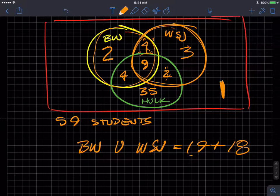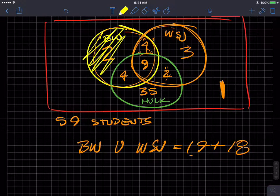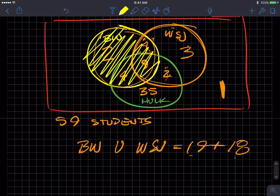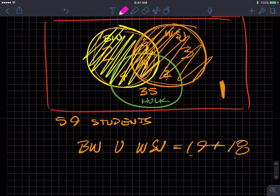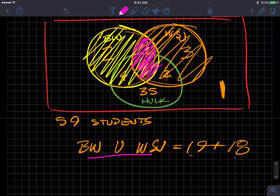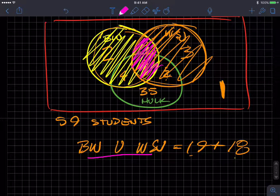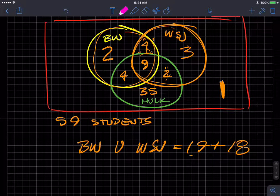What that's doing, if you look at the Venn diagram, is you're adding 19, everybody in the yellow, in here. And you're adding 18, everybody in the orange, here. But what did you do twice? You added this region two times.